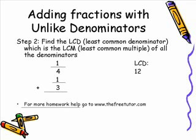Step 2. Once you've lined your fractions up, you must find what's called the least common denominator, or the LCD. The LCD is the least common multiple, or LCM, of all denominators. For example, in our problem 1 fourth plus 1 third, the denominators are 4 and 3. The least common multiple of 4 and 3 is 12, so our least common denominator will be 12.